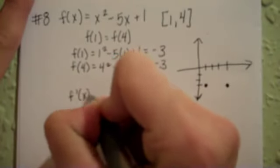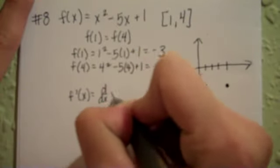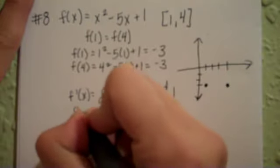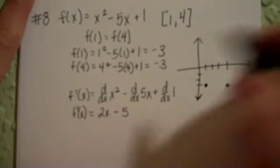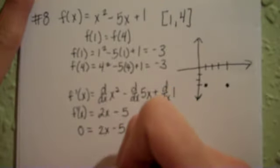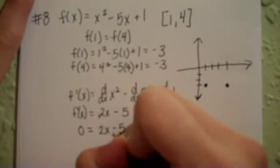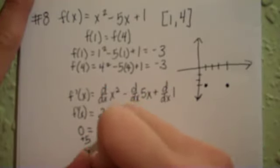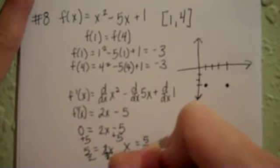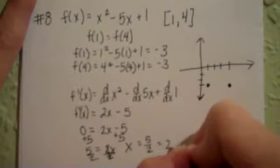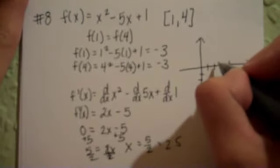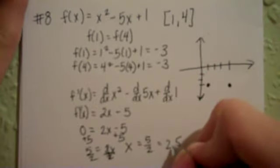f prime of x is going to be equal to the derivative. And, once again, I'm just going to apply the derivative to each one of these terms separately. So, here's what I got. f prime of x is equal to 2x minus 5. And, what I want to figure out is, where is this going to be equal to 0? Or, for what value of x is my derivative, or the slope of the tangent line equal to 0? Solve for that x. So, x is equal to 5 halves, or, in other words, 2.5.